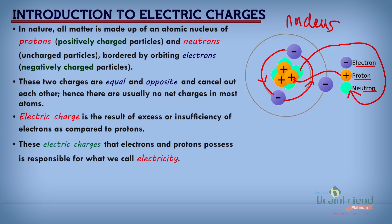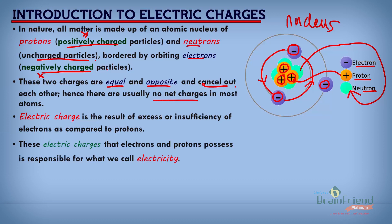We learned that all protons are positively charged, neutrons have no charge — they are neutral — and electrons are negatively charged. These two charges, positive and negative, are equal. Notice we have one, two, and three charges on our protons, and likewise one, two, and three electron charges. So they are usually equal and opposite, and because of that they cancel out each other. There are usually no net charges in most atoms — the normal atom is neutral with regard to electric charge.